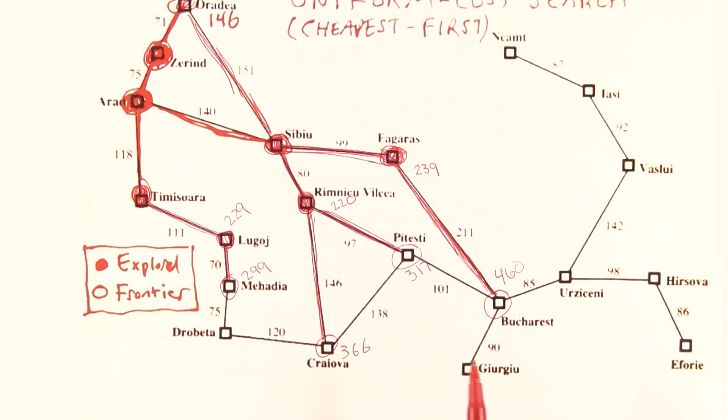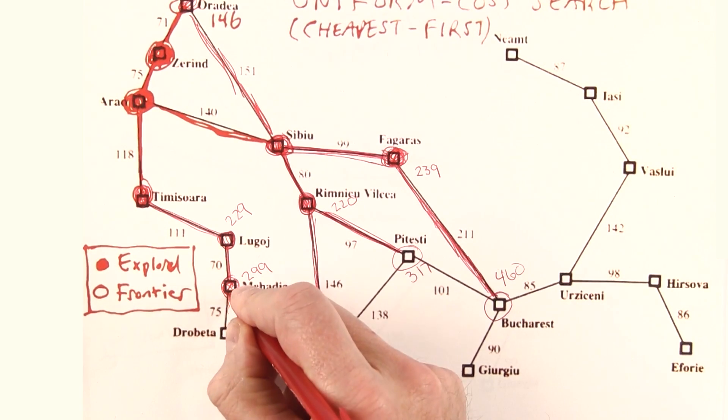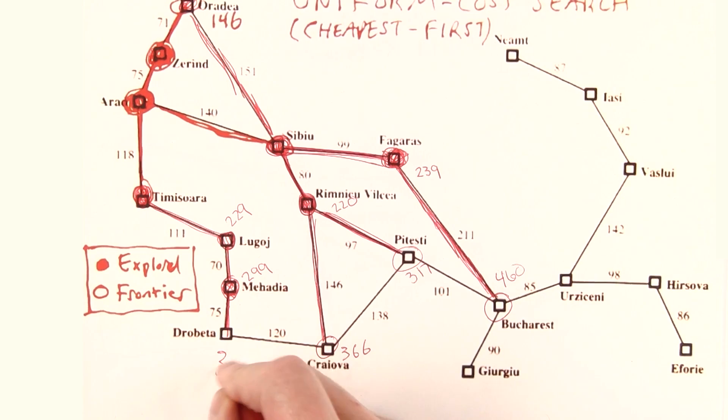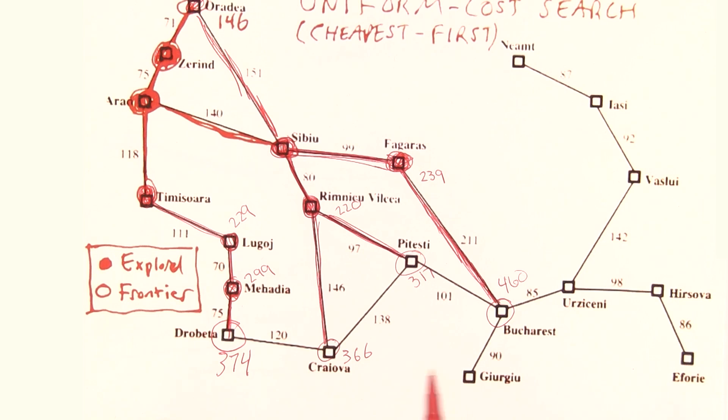Then let's see what's next. Looking on the frontier, the cheapest now is here at 299. We'll expand that. We get a path of cost 374. Put that on the frontier. Now let's go again.